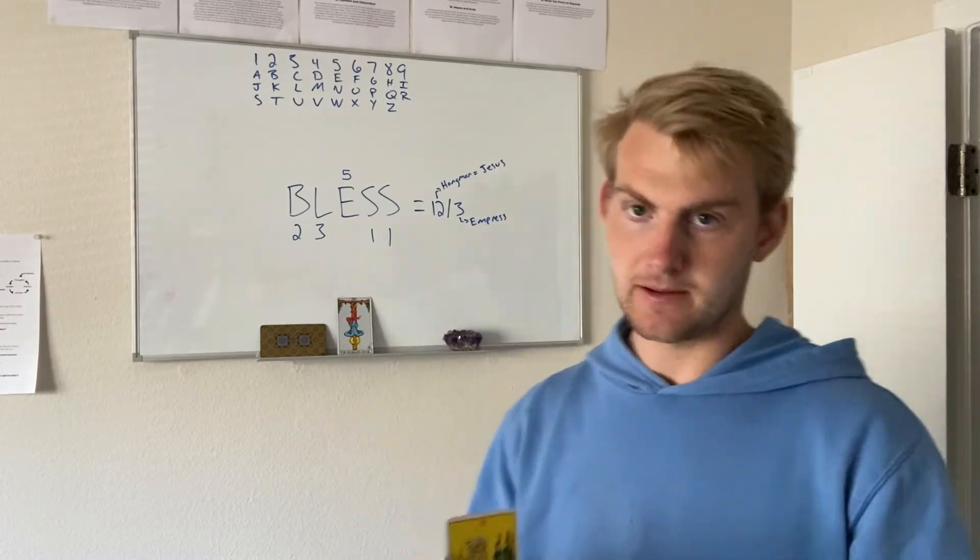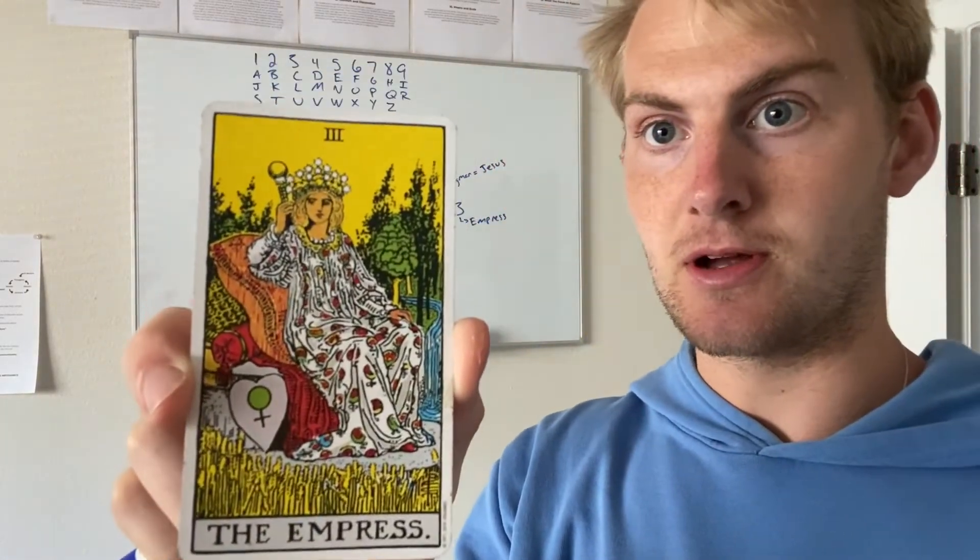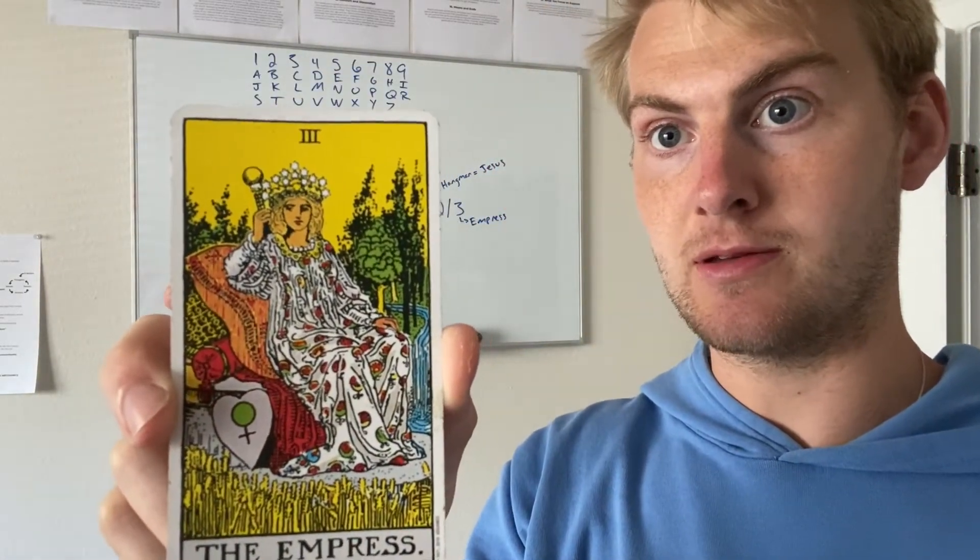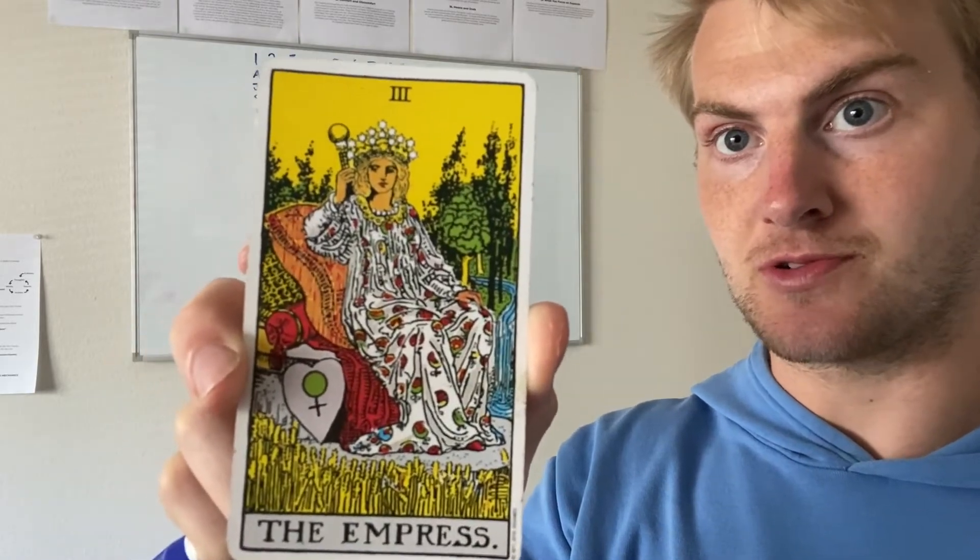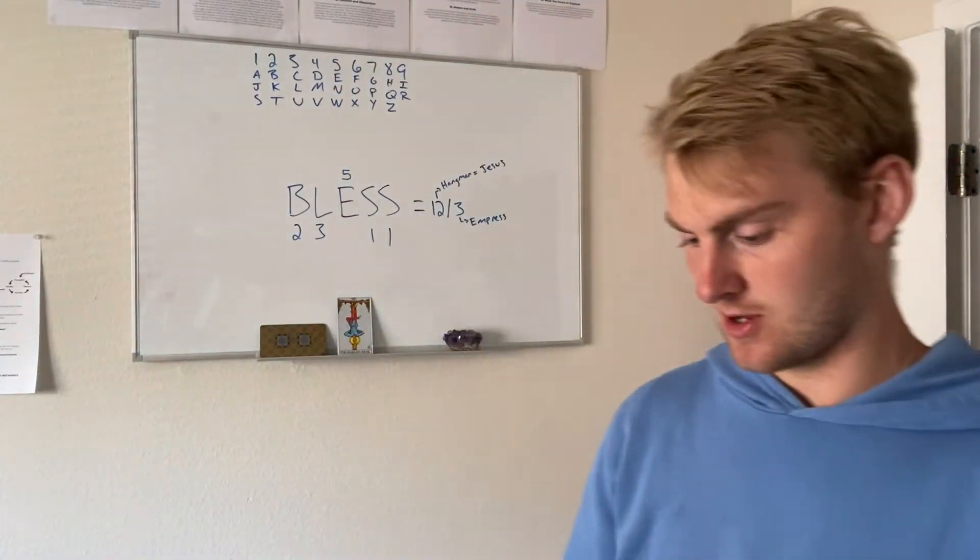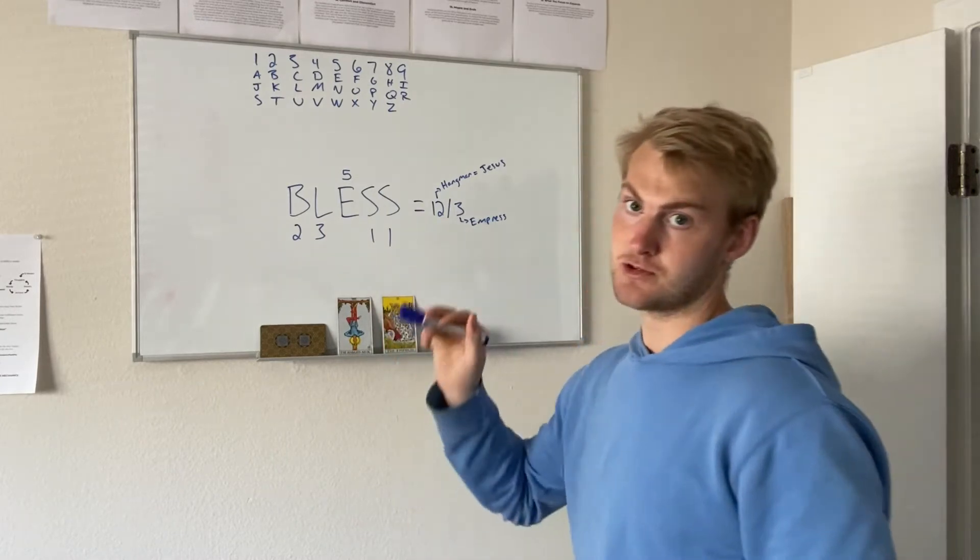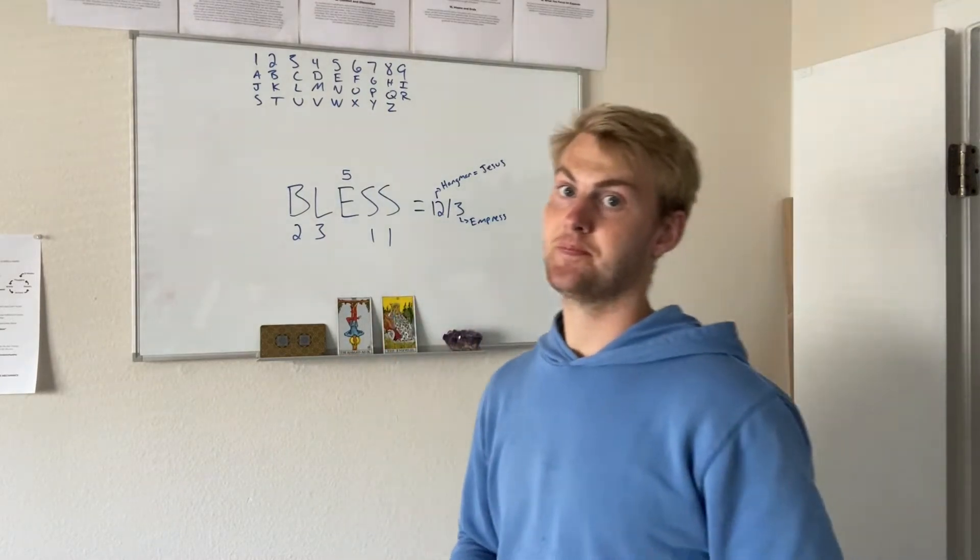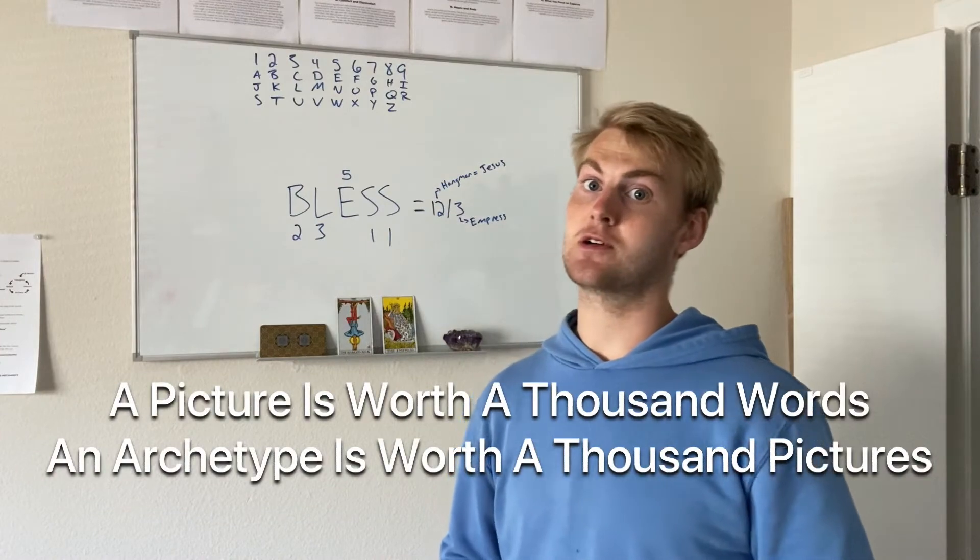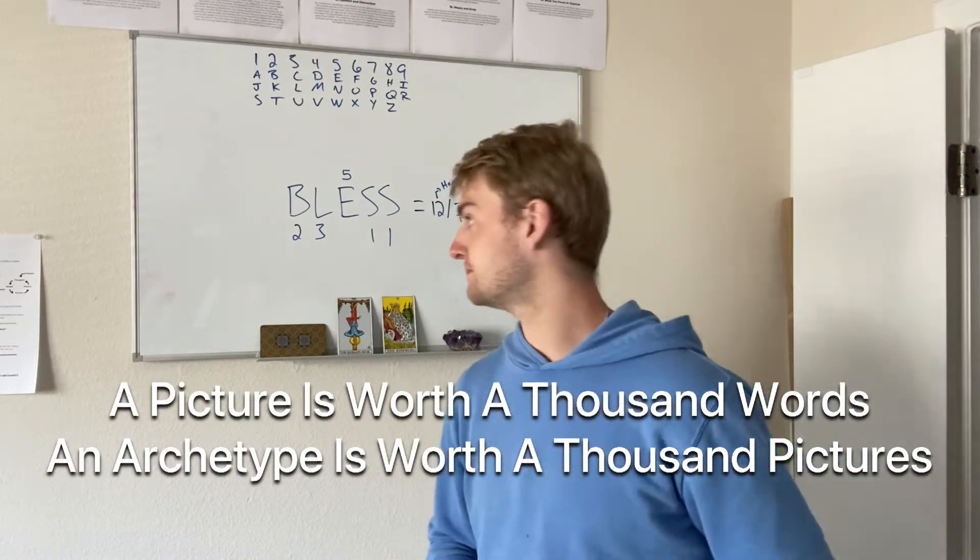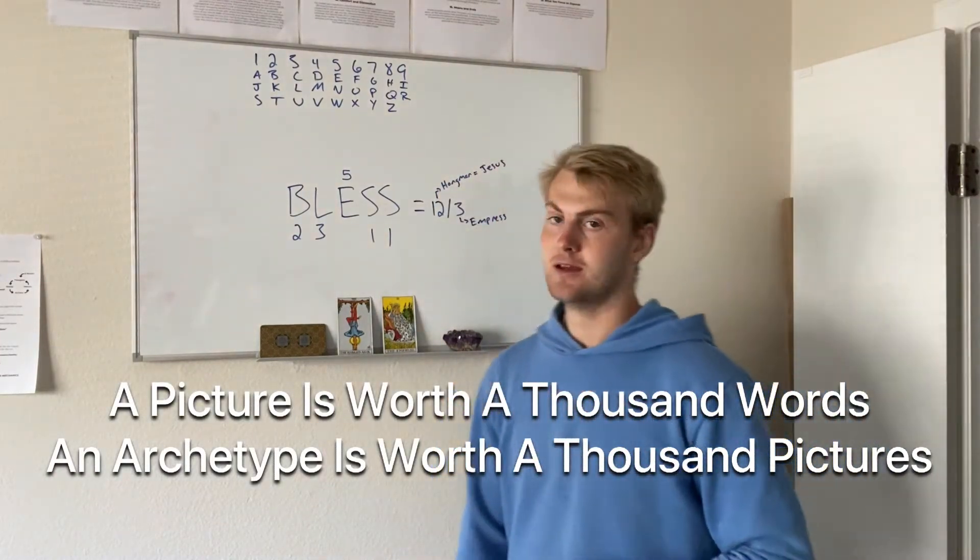And then The Empress—a lot of yellow, you see that, very earthy. It's a woman. Look at all the symbols. There's a lot of different symbols on The Empress card. That's why I love tarot—it's all about symbols. They're using archetypes because pictures are worth a thousand words and archetypes worth a thousand pictures.